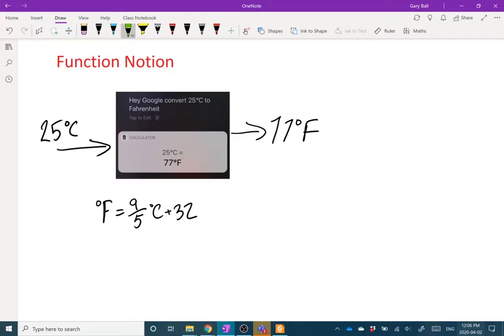So this is an equation because the degrees Fahrenheit equals 9 fifths, the number of degrees Celsius you have, plus 32.